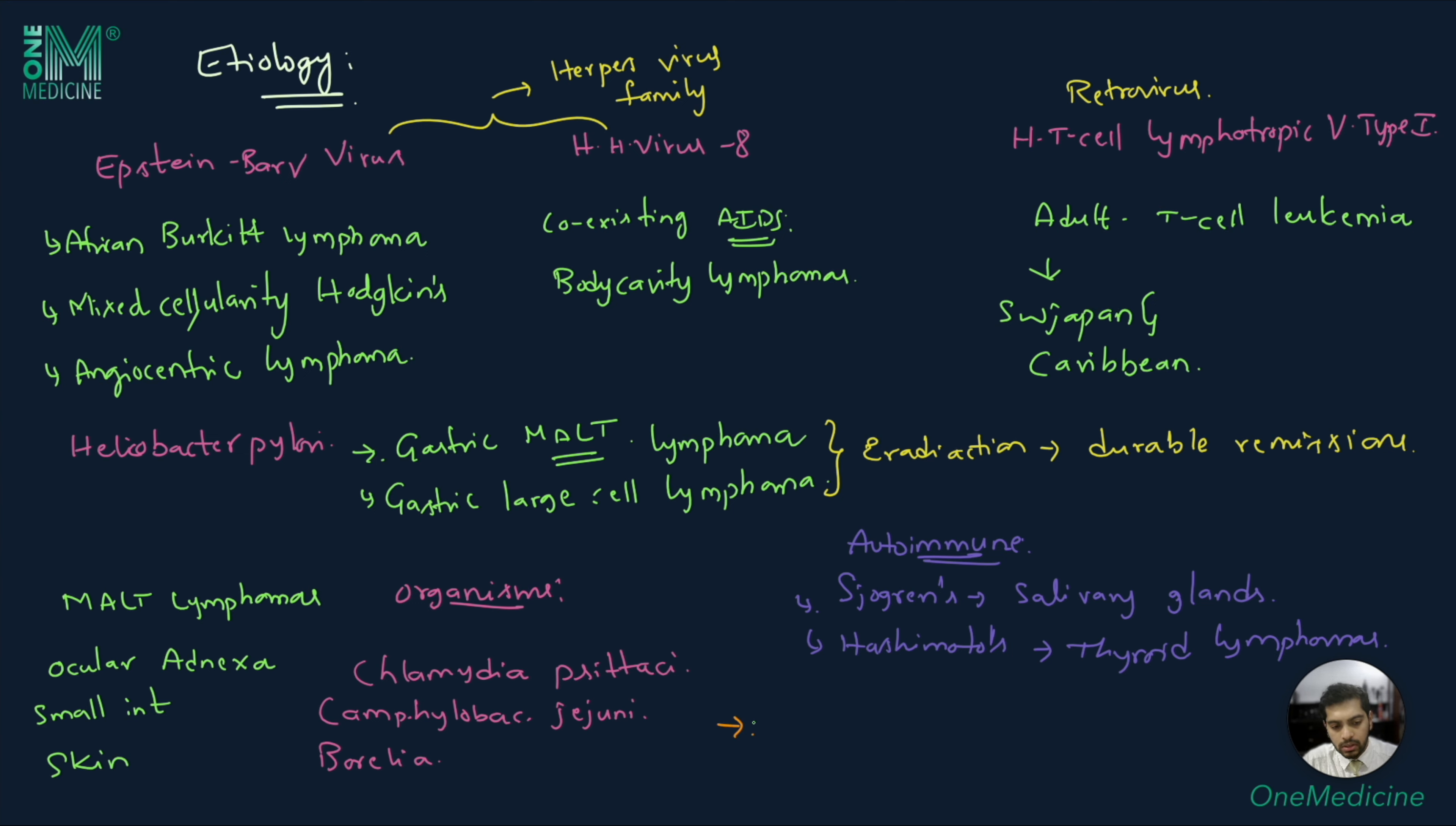An interesting point to note is lymphoma is 17 times more common in patients with HIV, and there is an increased incidence in patients who are meat workers and farmers. Hodgkin's disease is increased in patients with woodworking occupation history.